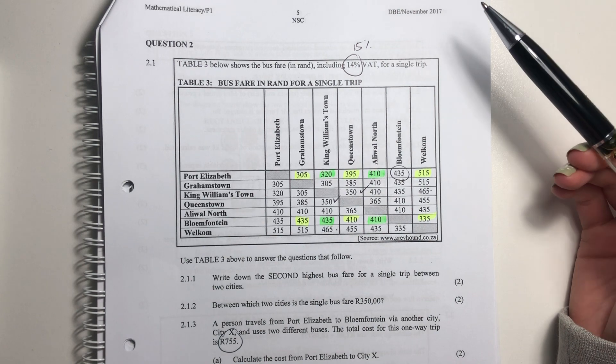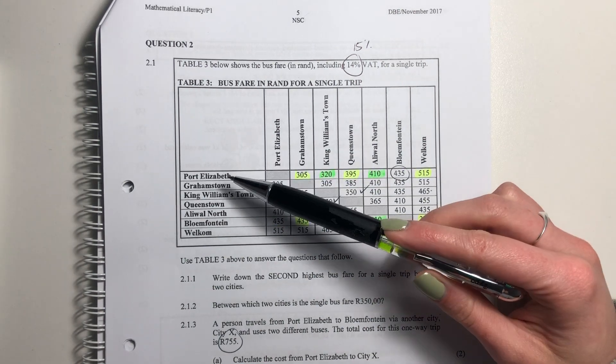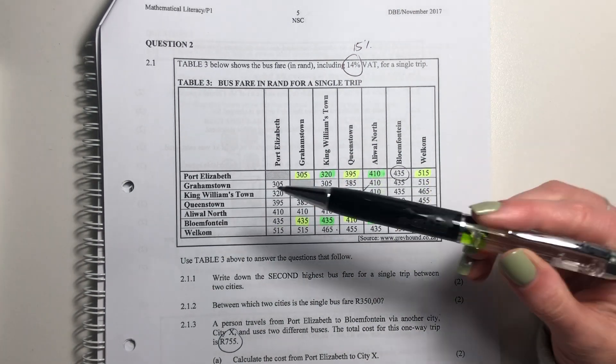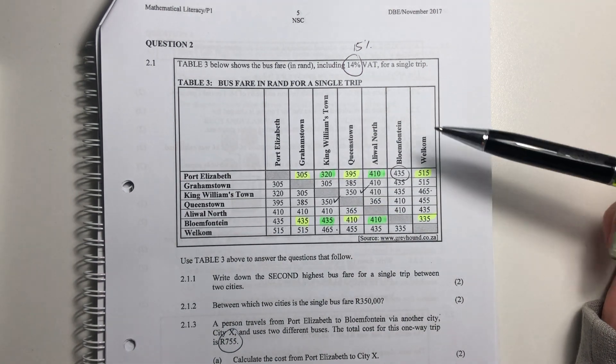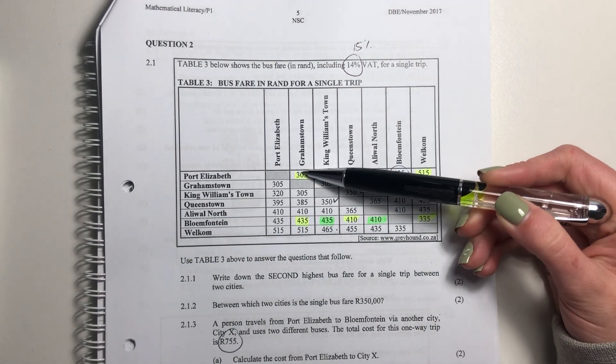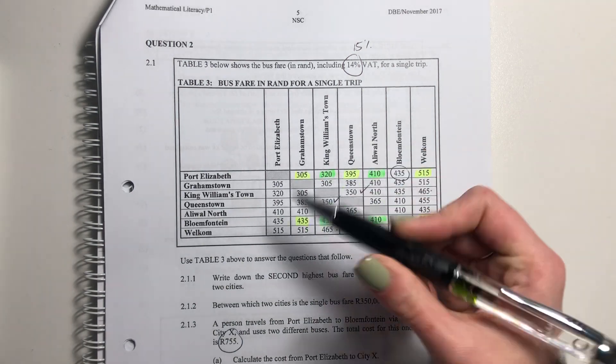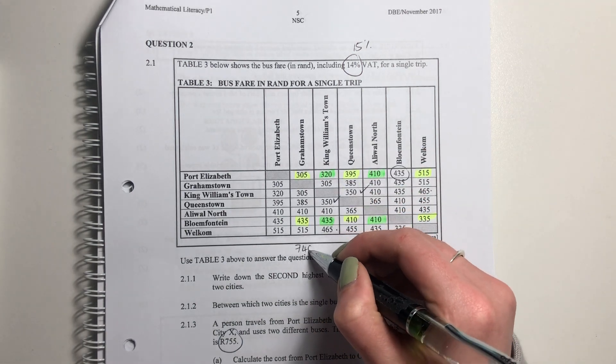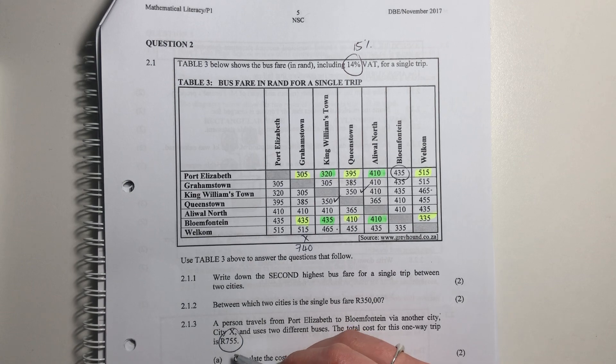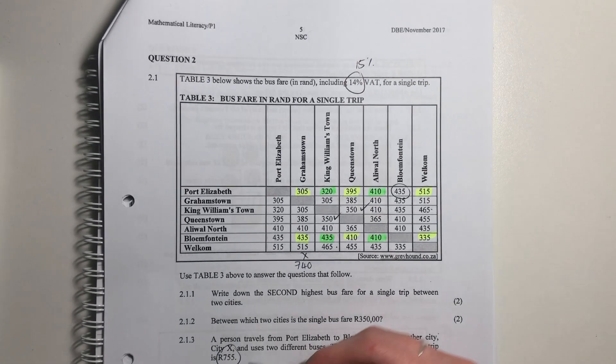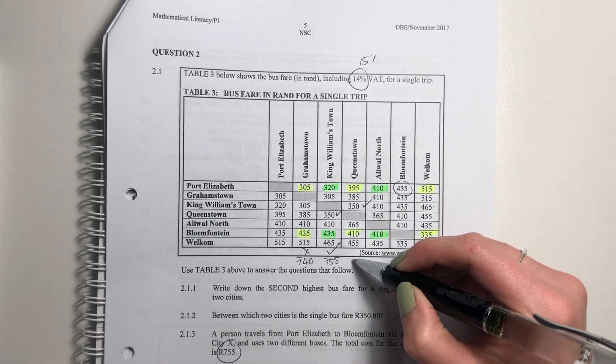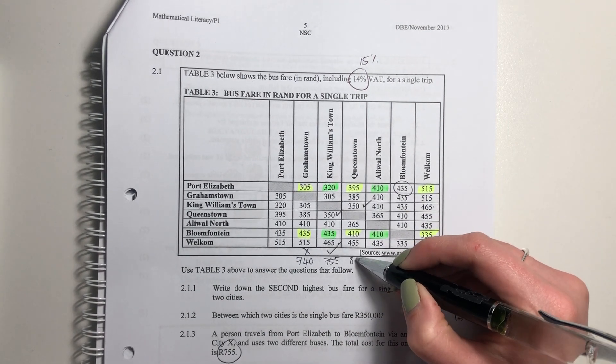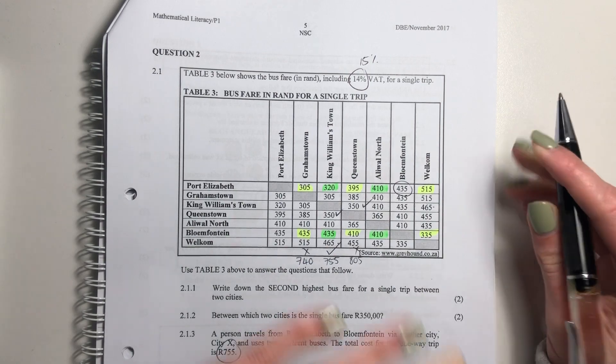You say, okay, they're not going straight from PE to Bloem. They're going via someone else. So let's go through all the different situations that we could have here. We can go from Grahamstown to Bloemfontein. And if I add those together, that's 740. So we know that it's not that one because it has to add up to 755. Add these two together, 755. So we know it can be that. Add these ones together, this is 805. Can't be that one. Too expensive.